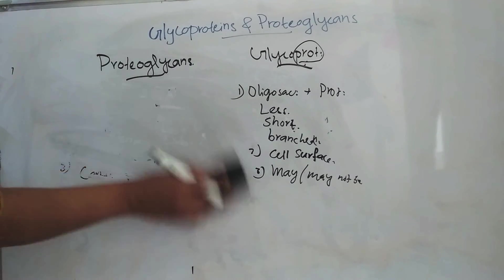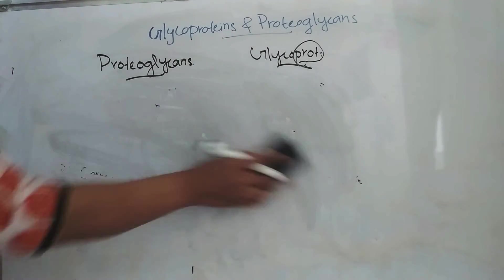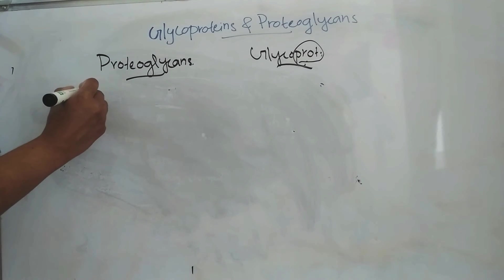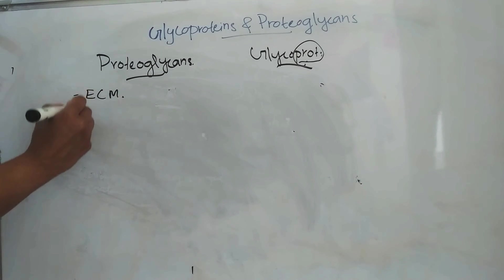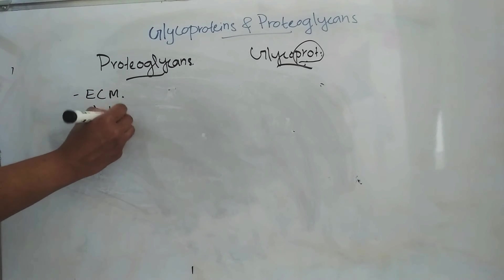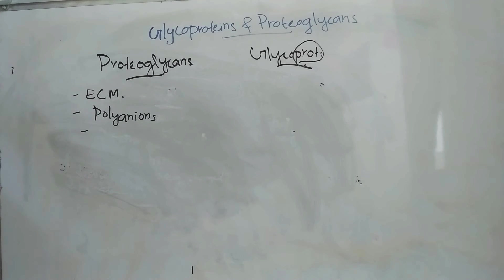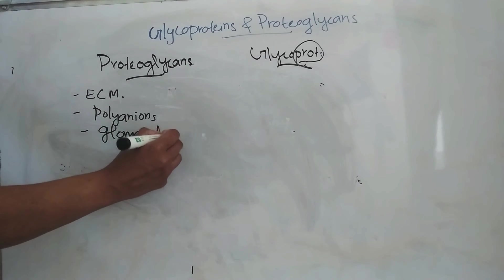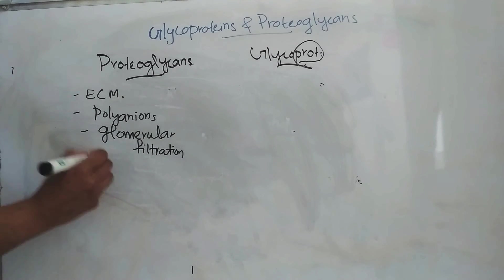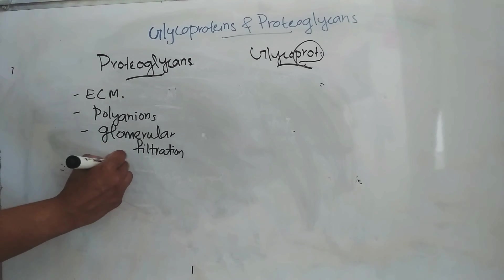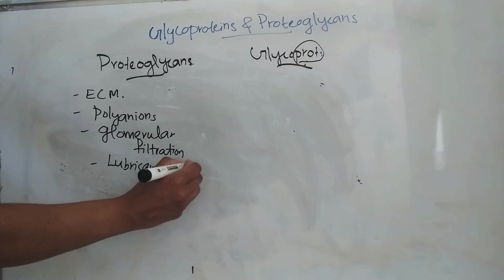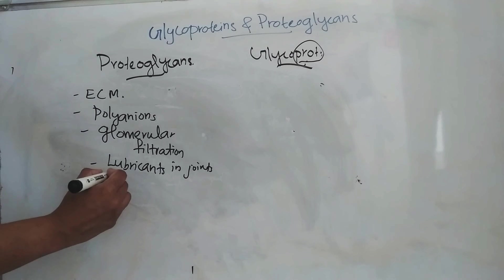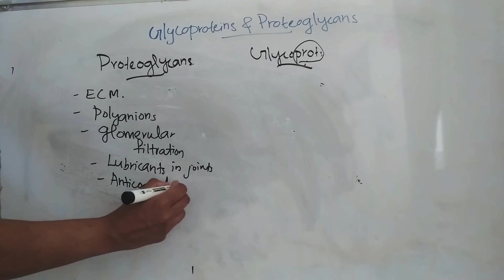Coming to the functions: the main functions of proteoglycans include — they are the main component of the extracellular matrix, they act as polyanions, they have a role in glomerular filtration, they act as lubricants in joints, and they act as anticoagulants in vivo and in vitro.